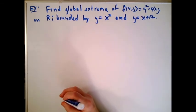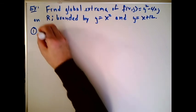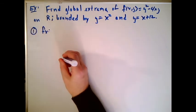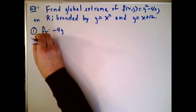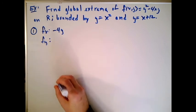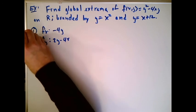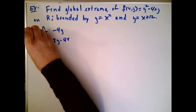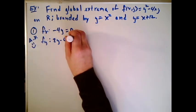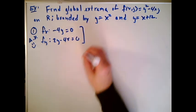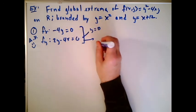The first part of the procedure is to find the critical points, just as we've been doing. We take the partial with respect to x and get -4y. We take the partial with respect to y and get 2y - 4x. Both partials are always defined, which means less work for us. Setting them equal to zero, the first equation tells us y = 0, and the second equation tells us that when y = 0, x = 0. So our critical point is (0, 0).